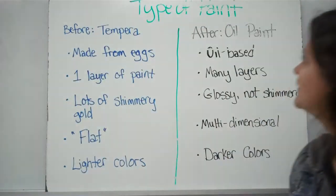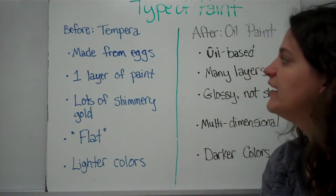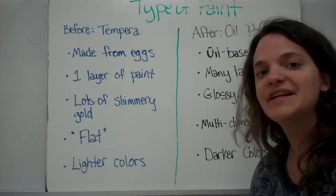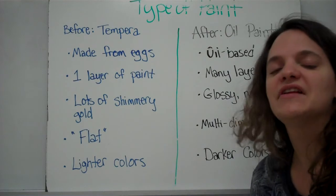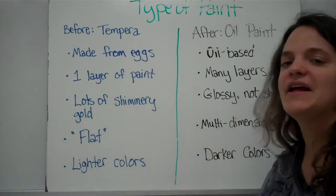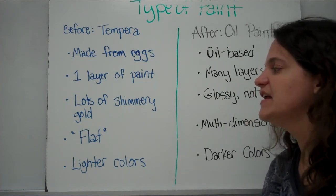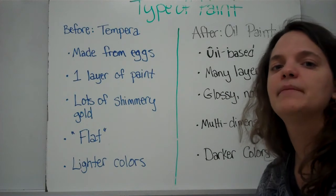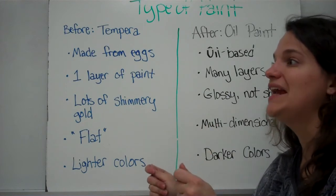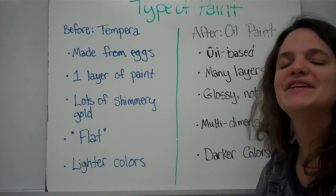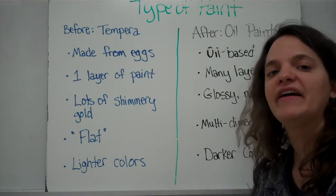The second thing to talk about with the Renaissance are the types of paint. In Renaissance art, we have a very clear pattern of what art was like before the Renaissance and what it became after. Before the Renaissance, there was a lot of emphasis on tempera paint, which is made from eggs. They would paint with one layer of paint in different colors, and there's a lot of shimmery gold in tempera paintings. They look very flat — almost one-dimensional and not very lifelike — often using a lighter color palette.